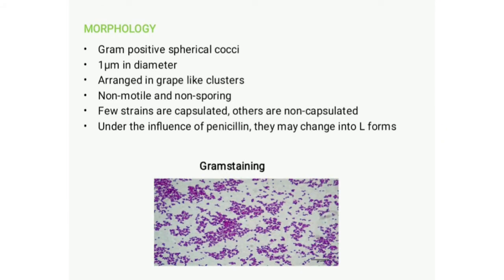Regarding the morphology of Staphylococcus aureus: they are spherical cocci approximately one micrometer in diameter, arranged in grape-like clusters. This cluster formation is due to cell division occurring in three planes, with daughter cells tending to remain in close contact with the parent cell. They are non-motile and non-spore-forming organisms.